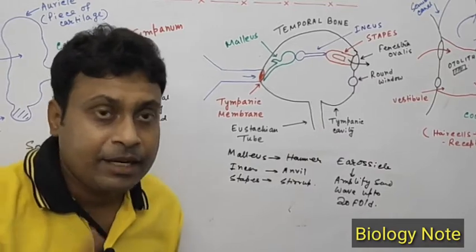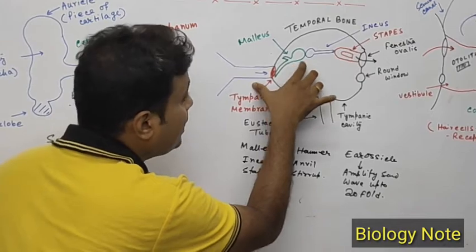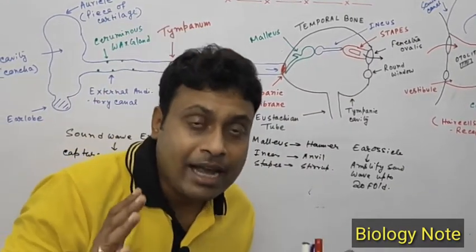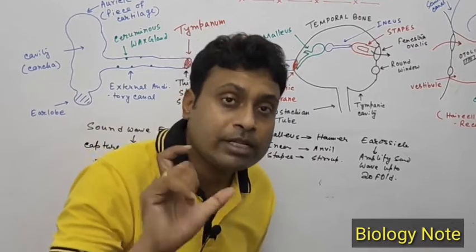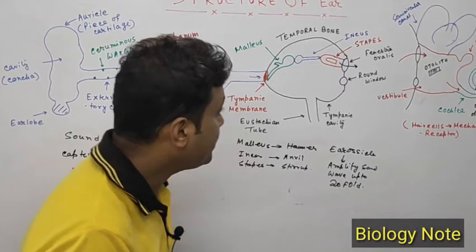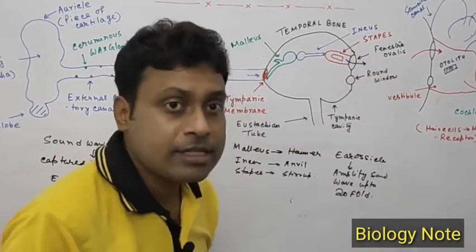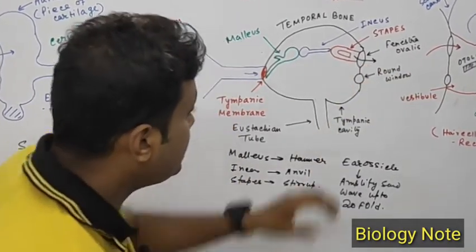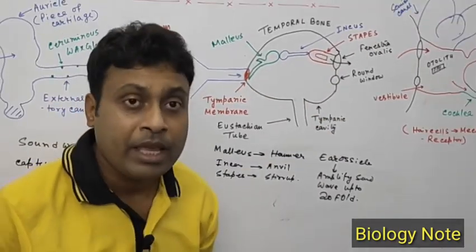The malleus remains attached to the tympanic membrane on one side and is articulated with the incus on the other side. The incus is articulated with the stapes, the smallest bone in the human body. In the tympanic cavity there are two apertures: the fenestra ovalis, which is the upper aperture, and the round window, which is the lower aperture.